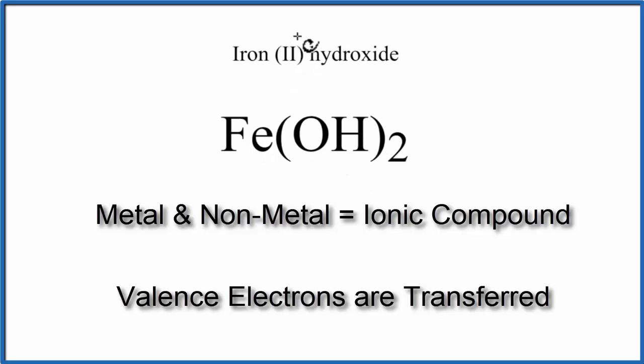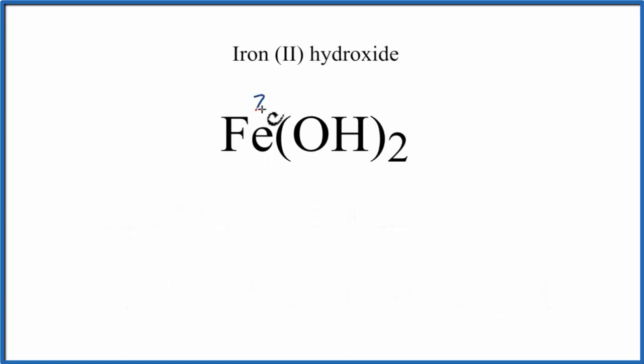So we know that this 2 up here tells us we have a 2+ for the Fe, and then OH, that's the hydroxide, we can look that up on a table of polyatomic ions. It has a 1- charge. We have 2 of them, so 2 times 1-, that's negative 2, that cancels the positive 2 out. This is a neutral compound.